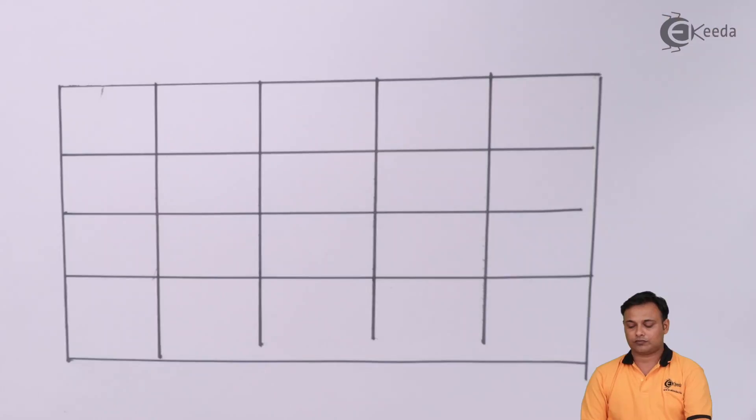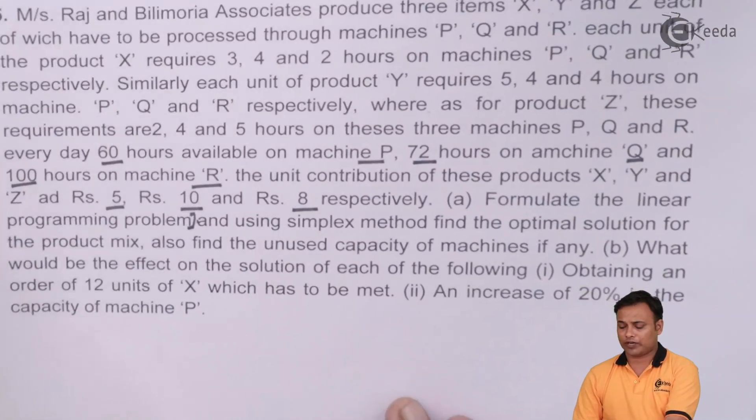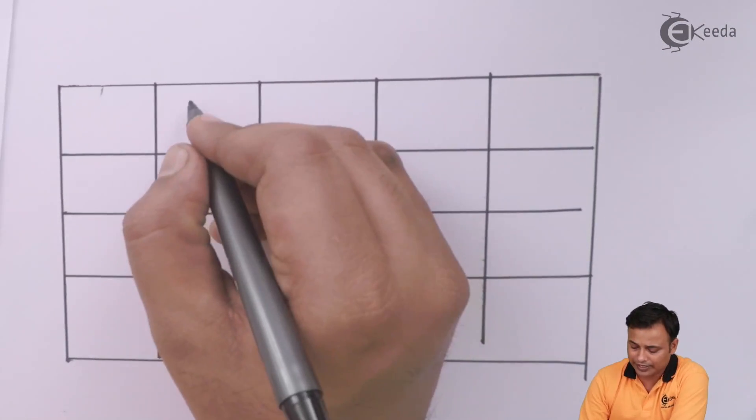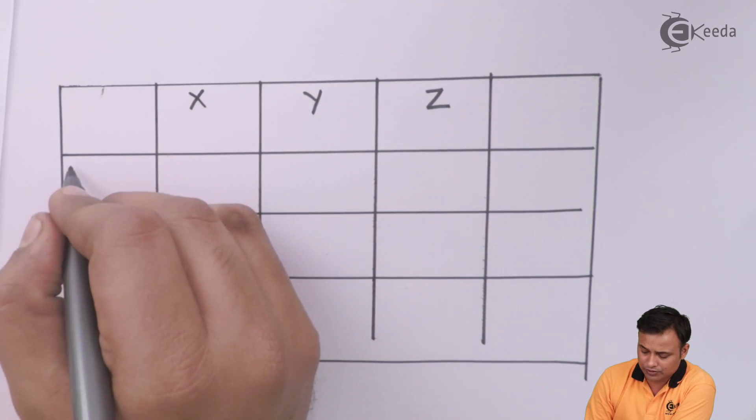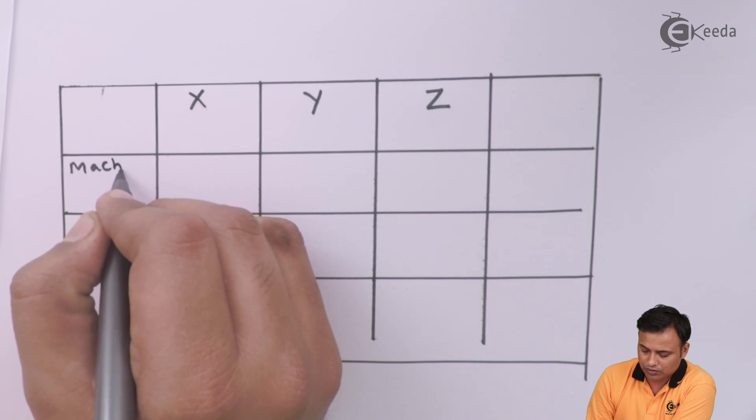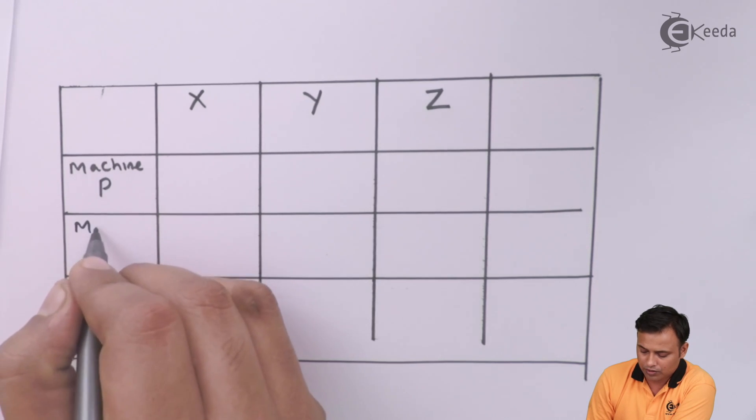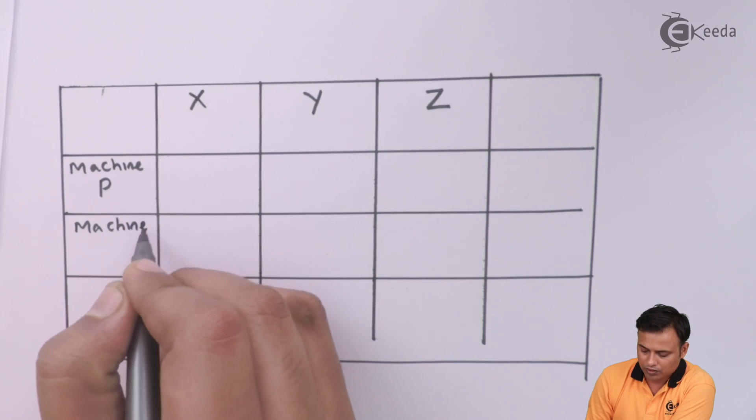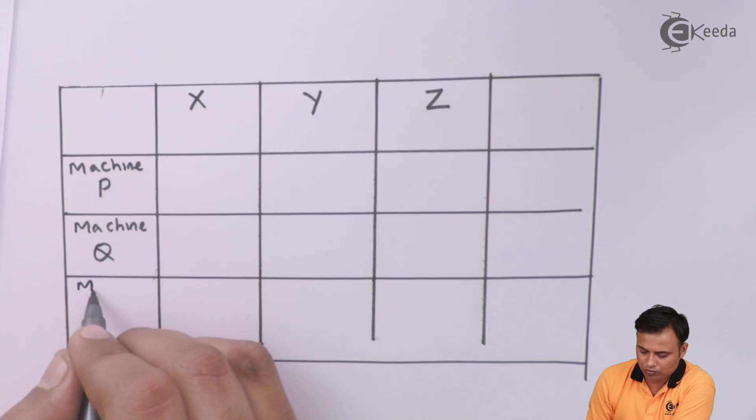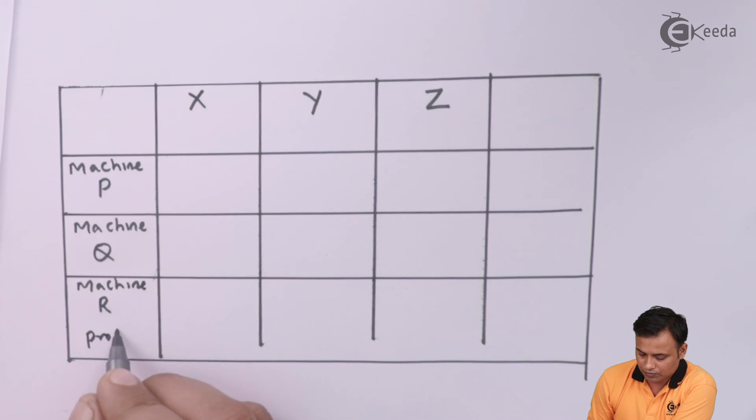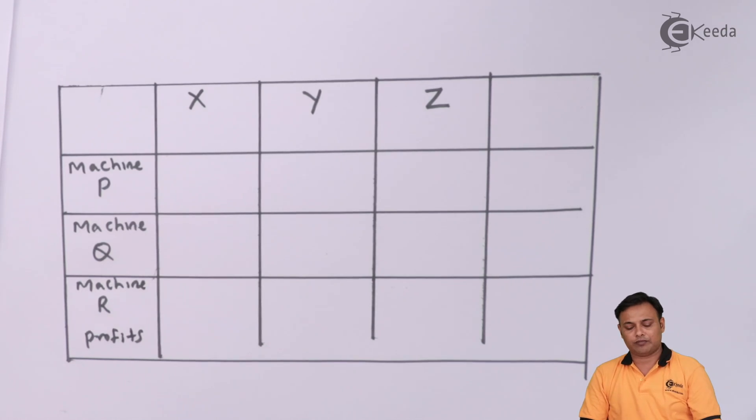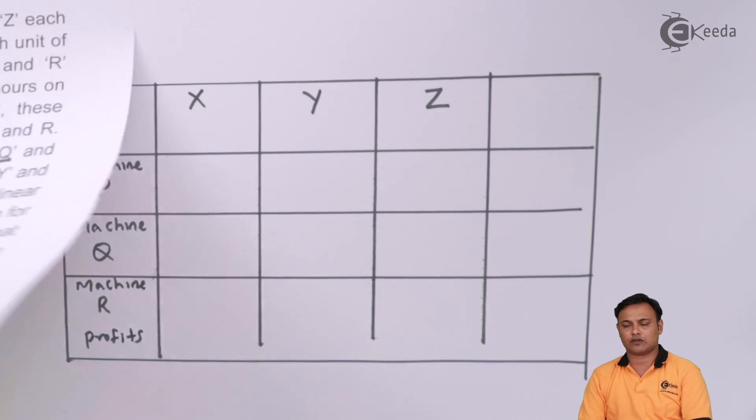So here is my table now. So first note down the products X, Y and Z in the columns. So here is my product X, product Y and product Z. And then we have machines, machine P, machine Q and machine R. And you also know the profits. So what is the time taken by each of the machine for each of the product.